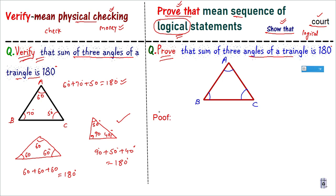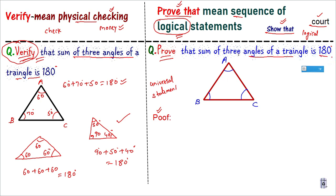But if the question says 'prove करो', then you need to give a proof. And जो proof मिल जाता है, वो universal statement बन जाती है। A universal statement is formed only when its proof is available. This universality does not happen in verification — in verification you are only checking.